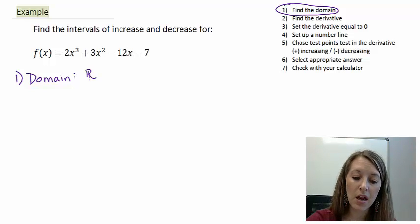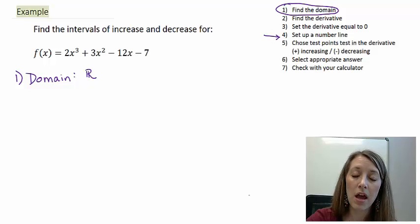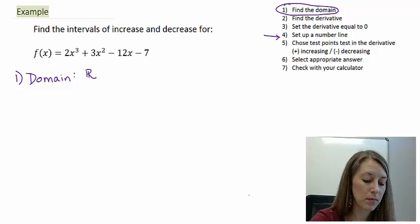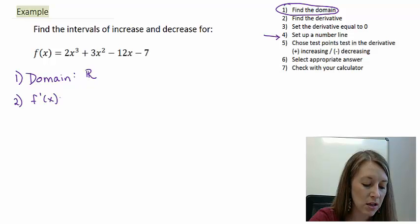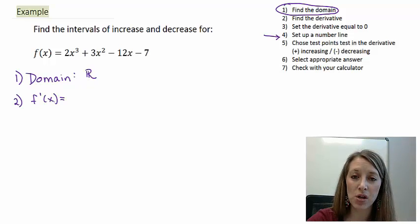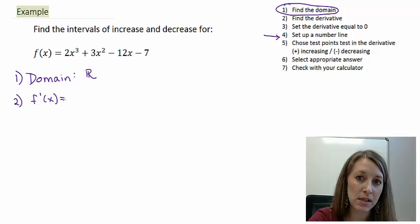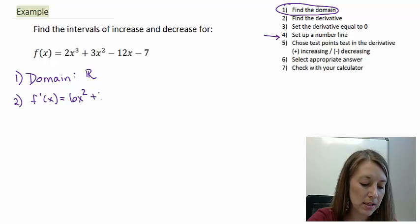If we had exclusions from our domain, those along with our critical values would need to go on our number line. Since we don't have any exclusions here, we don't have to worry about that when setting up the line. Step two is to find the derivative. We need to figure out what f prime of x is. This one's pretty easy since it's a polynomial — we have 6x squared plus 6x minus 12.